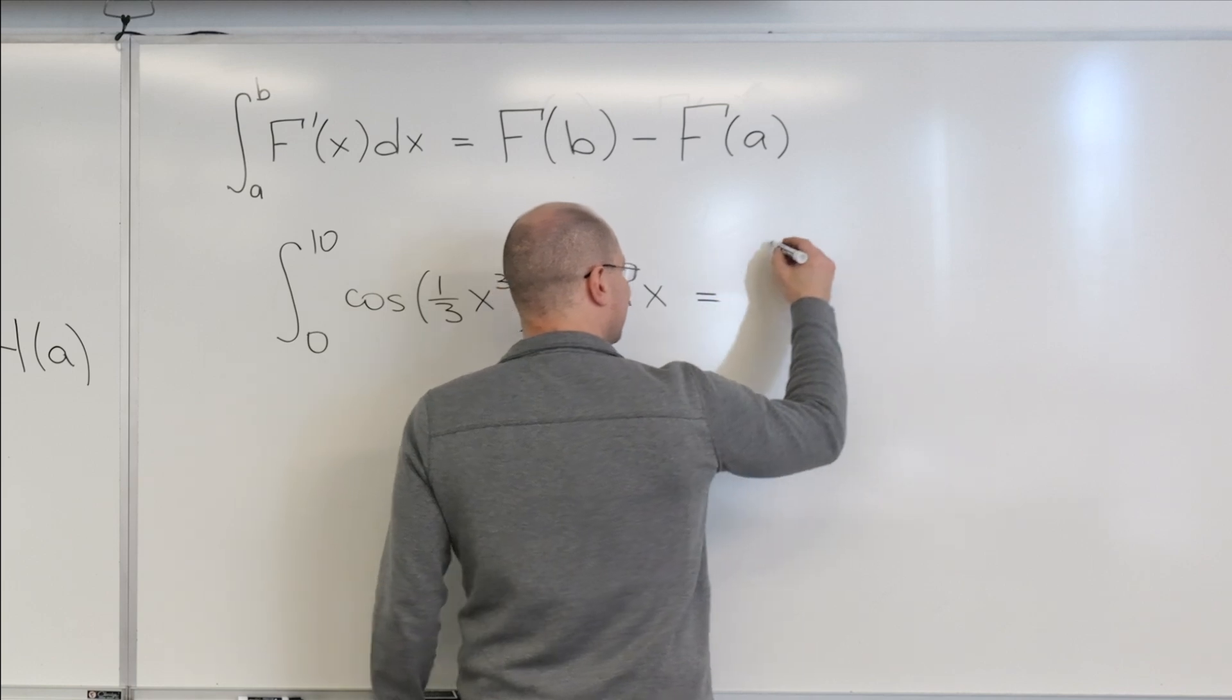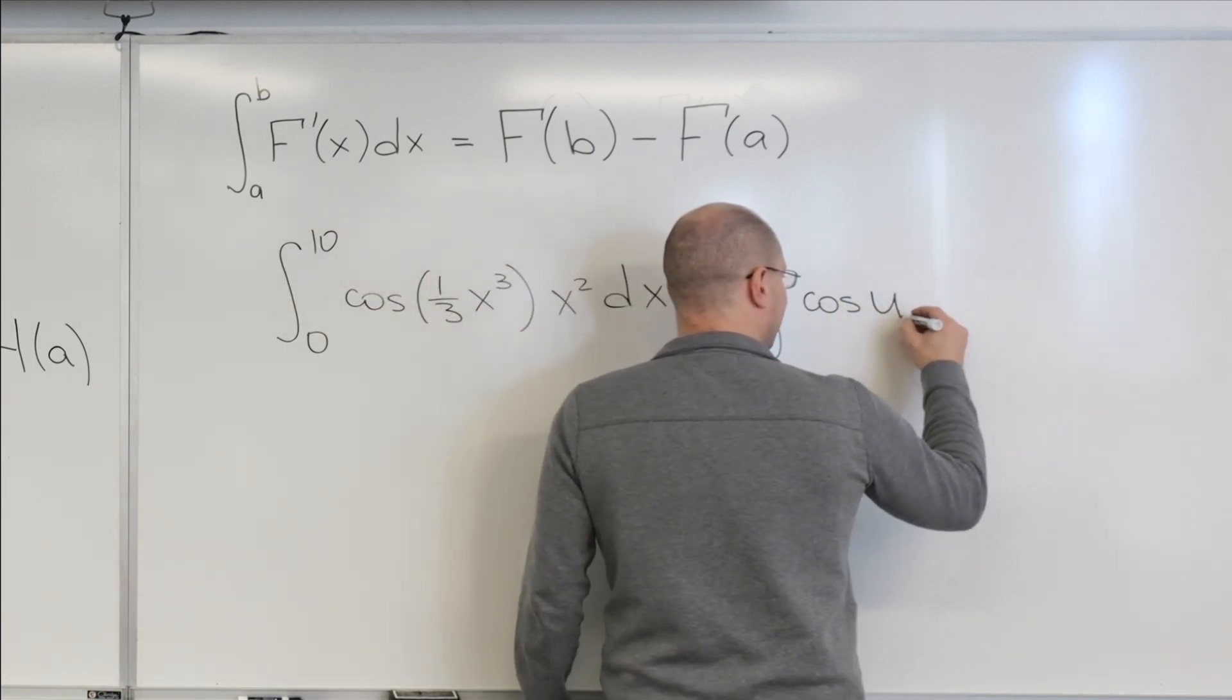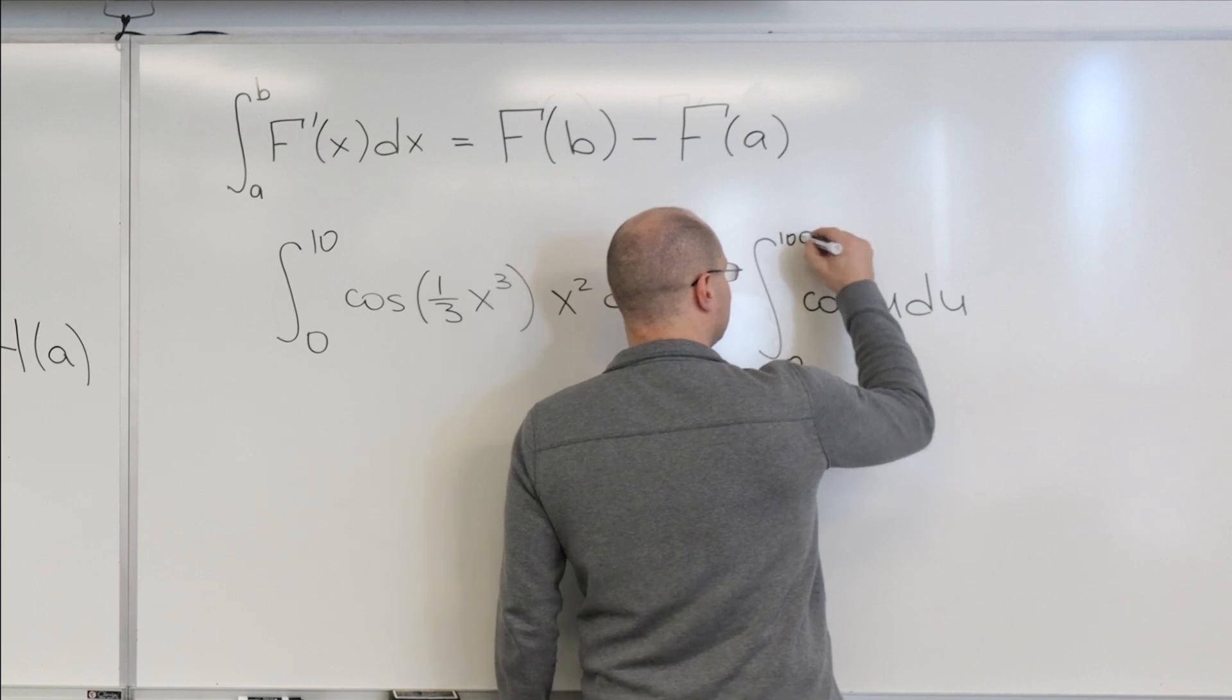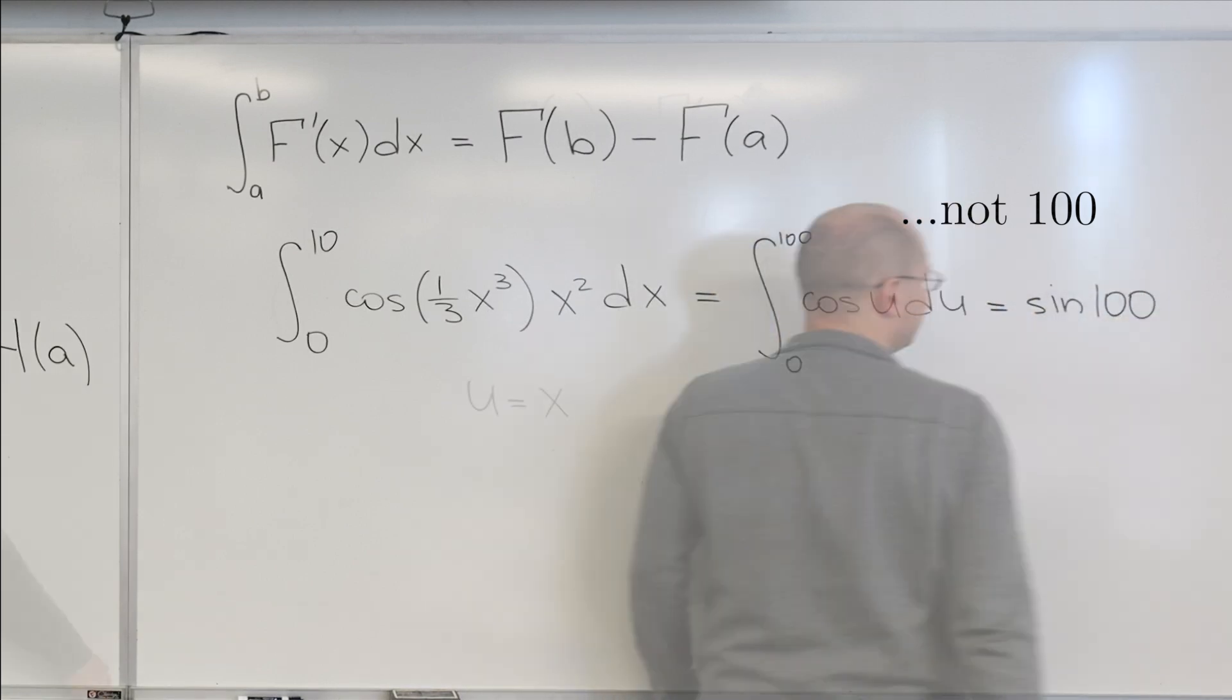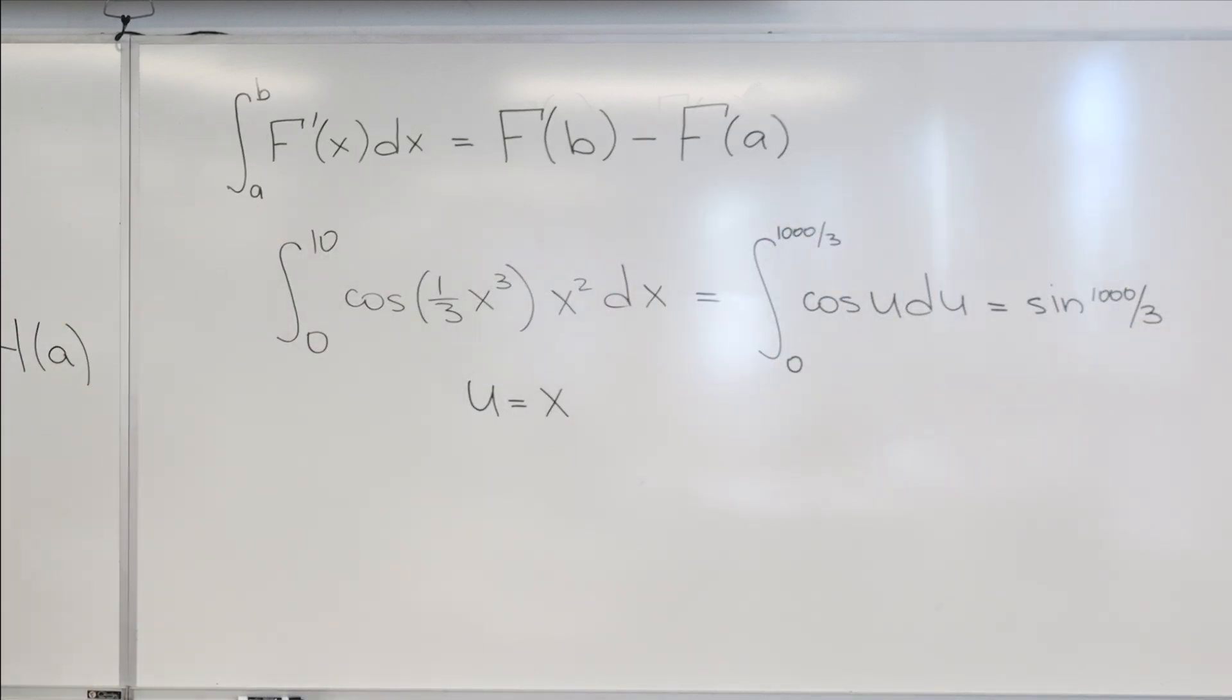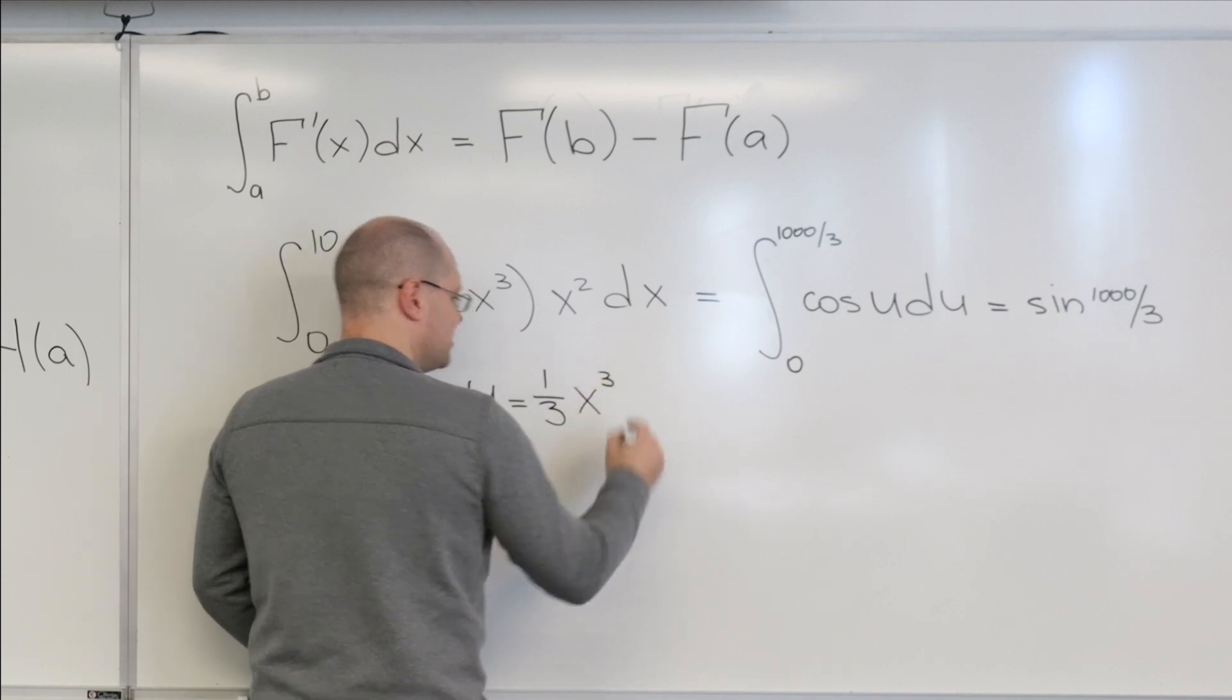So by that formula, it equals the integral of cosine of U DU. Or I, again, I'm just buckling to pressure from 0 to 100. And this equals sine of 100. Should it be 1,000 over 3? Yeah, yeah, yeah. Great.